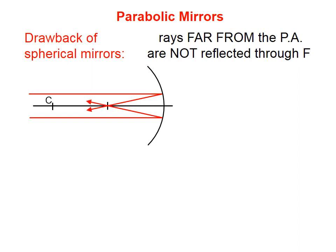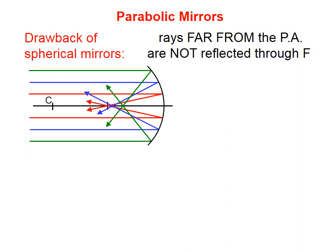We can see that rays that are fairly close to the principal axis are reflected through the focal point right there. But as the rays get further and further from the principal axis, we find that they are not reflected through the focal point.